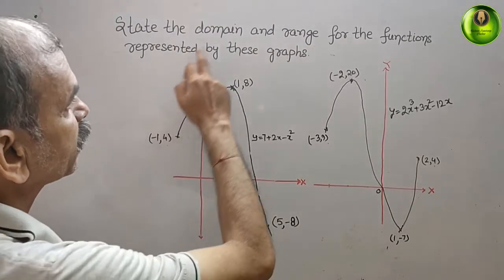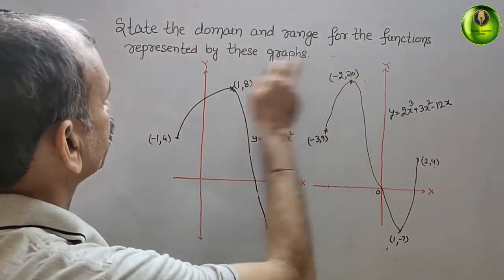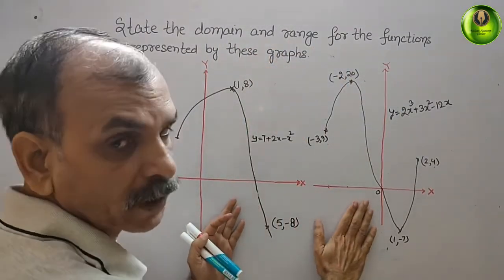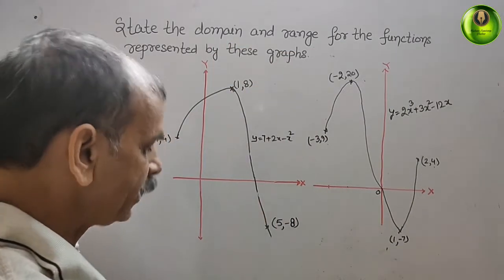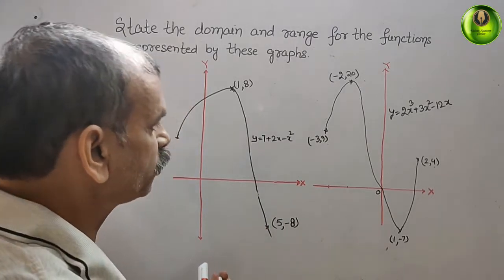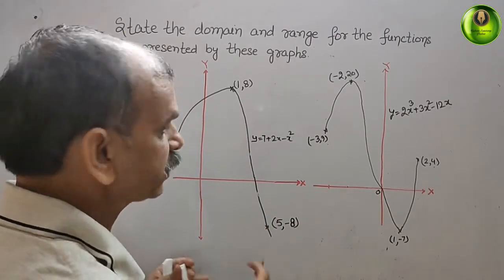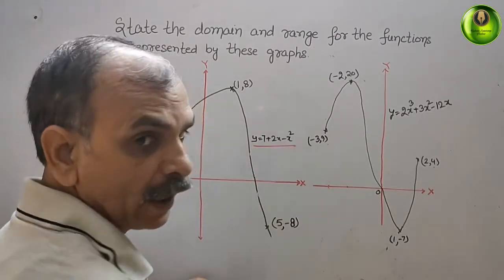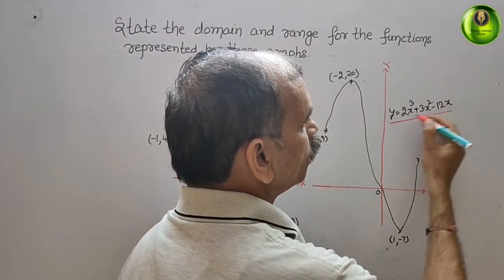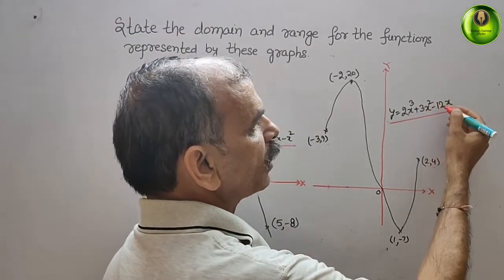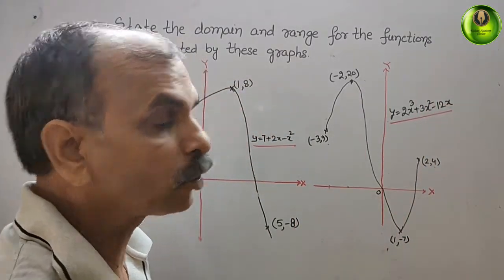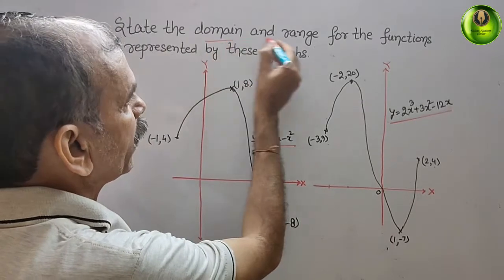The question asks to state the domain and range for the function represented by two graphs. The first function is y equals 7 plus 2x minus x squared, and for the second graph the relation is y equals 2x cubed plus 3x squared minus 12x. We need to find the domain and range for both.